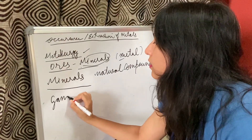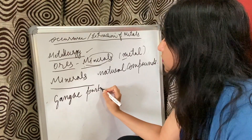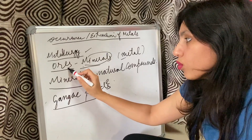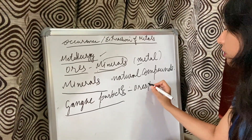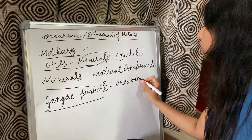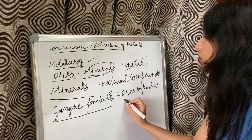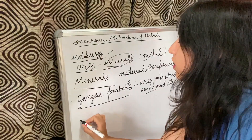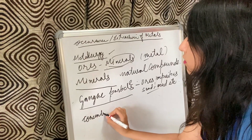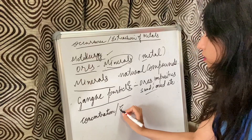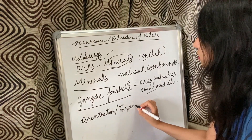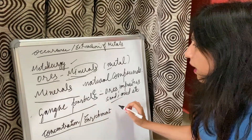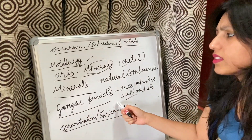Next is gang particles. These are the impurities present in the ores in the form of sand, mud, etc. Next is concentration or enrichment. This is the process by which we can remove the gang particles from the ores.